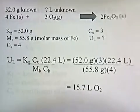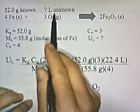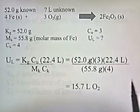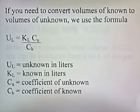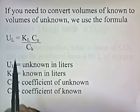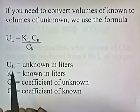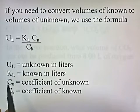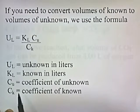Now let's do a volume to volume conversion. If you need to convert volumes of known to volumes of unknown, we use the formula UL equals KL times CU divided by CK. UL is the liters of unknown, KL is the known in liters, CU is the coefficient of the unknown, and CK is the coefficient of the known.